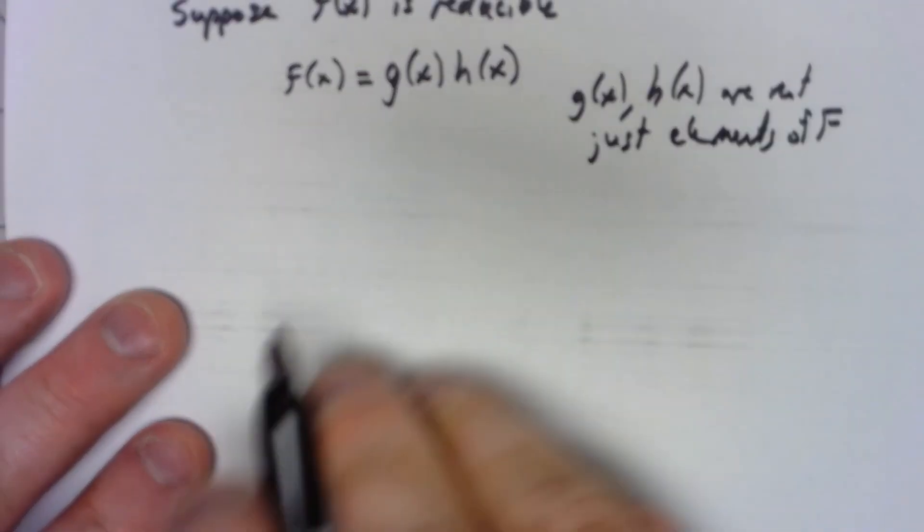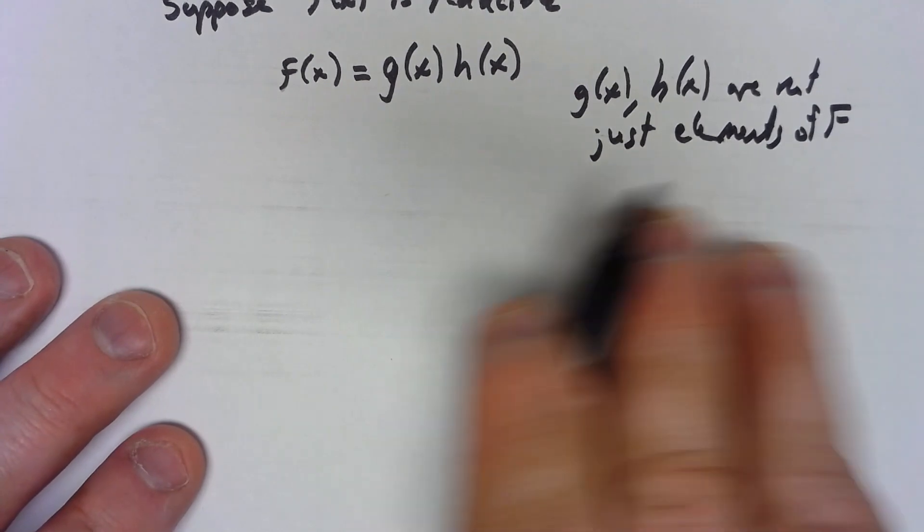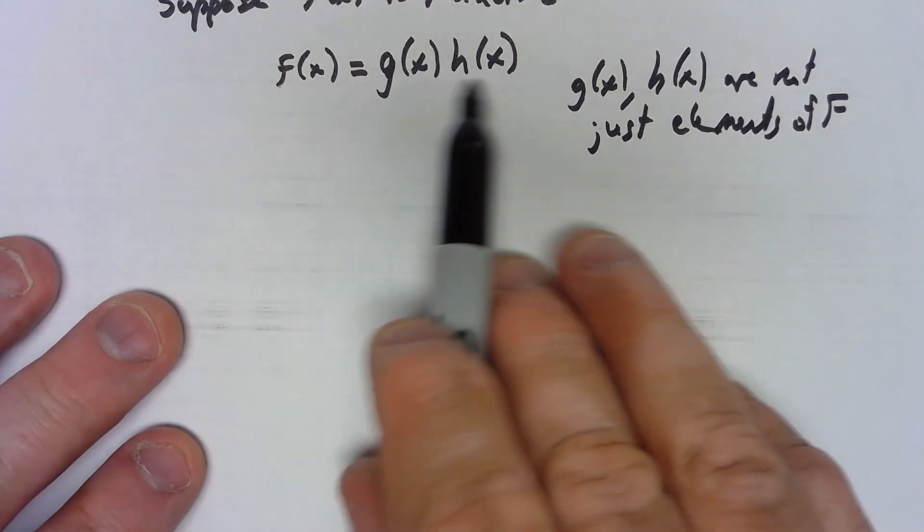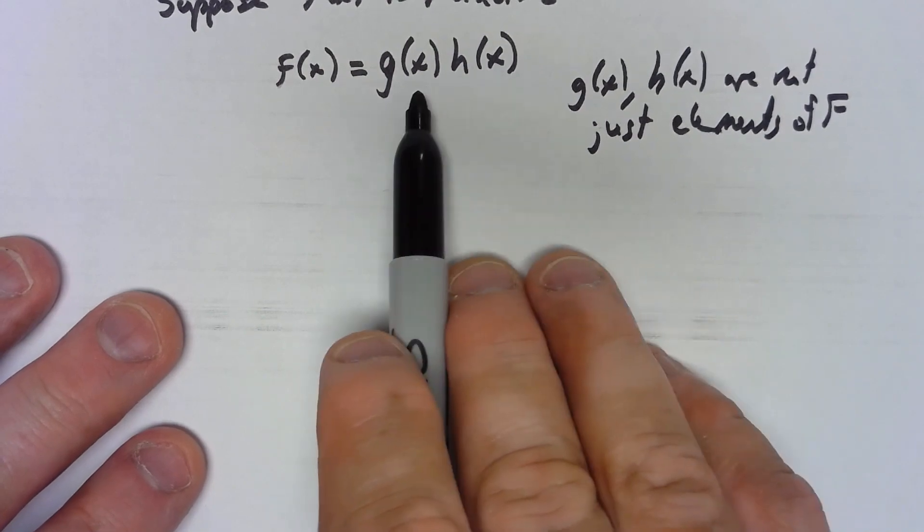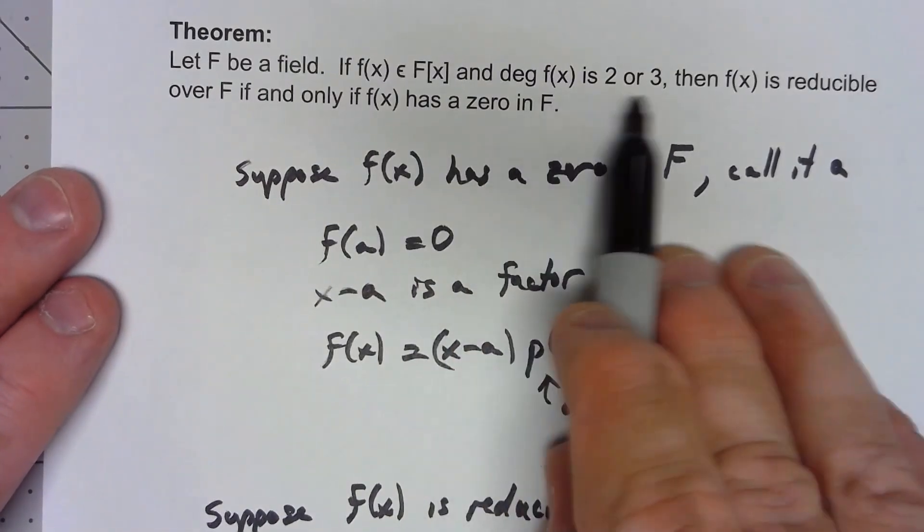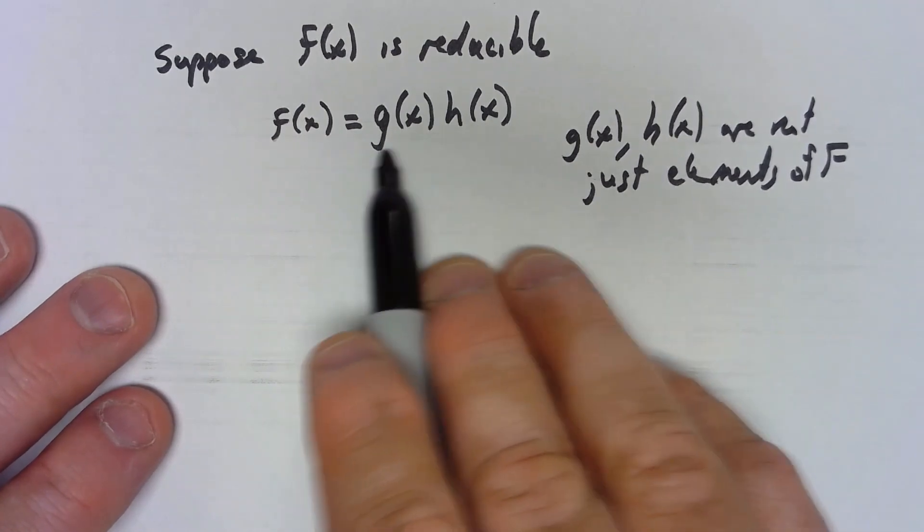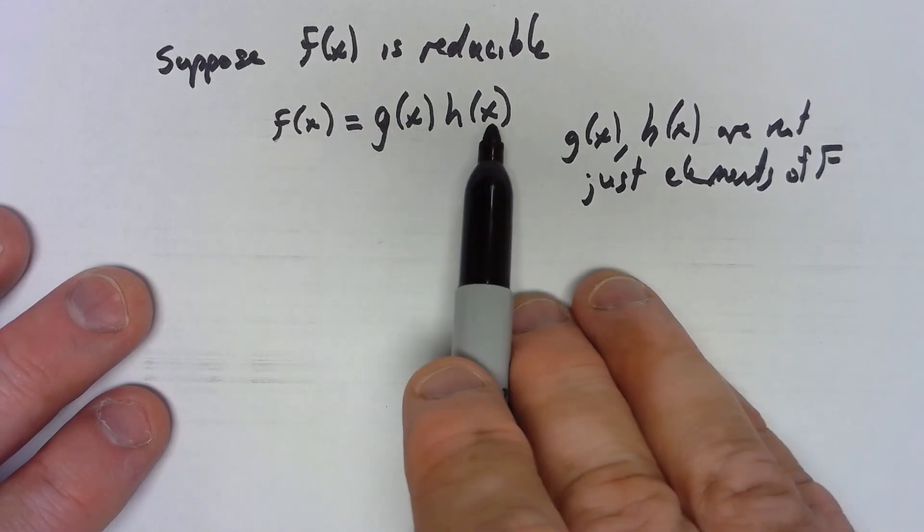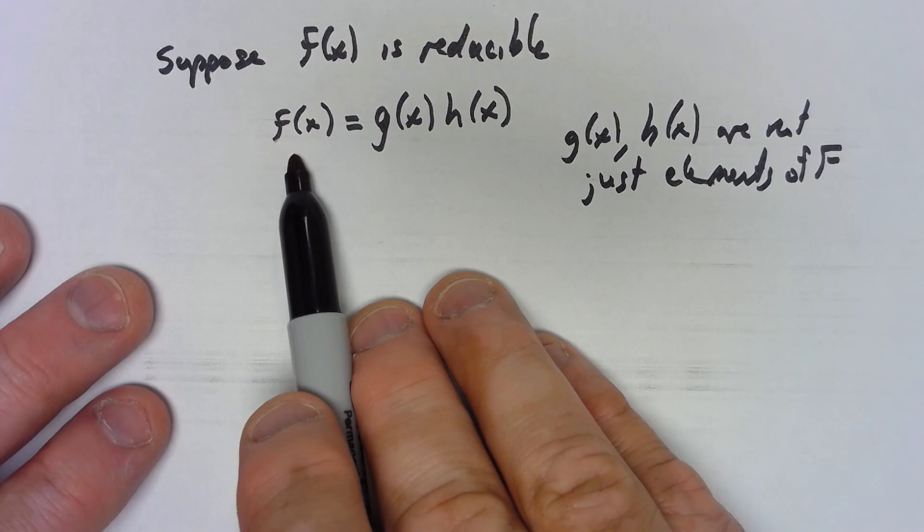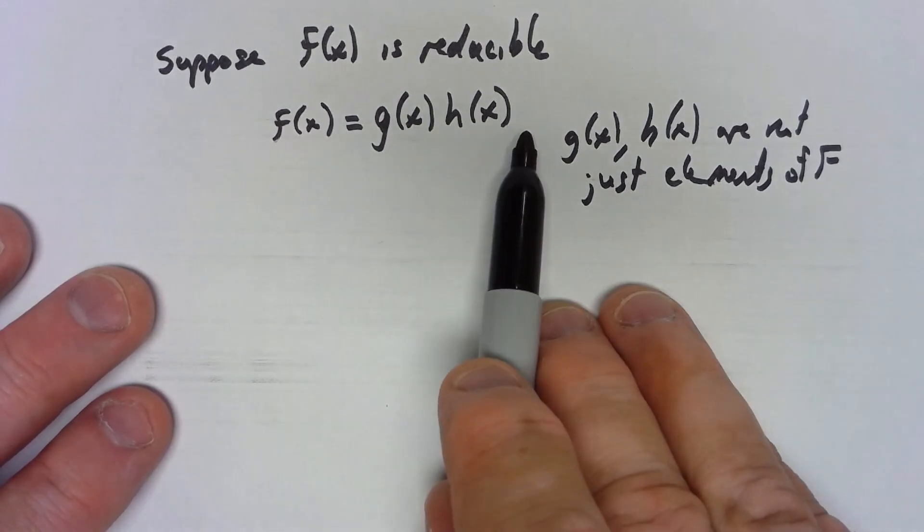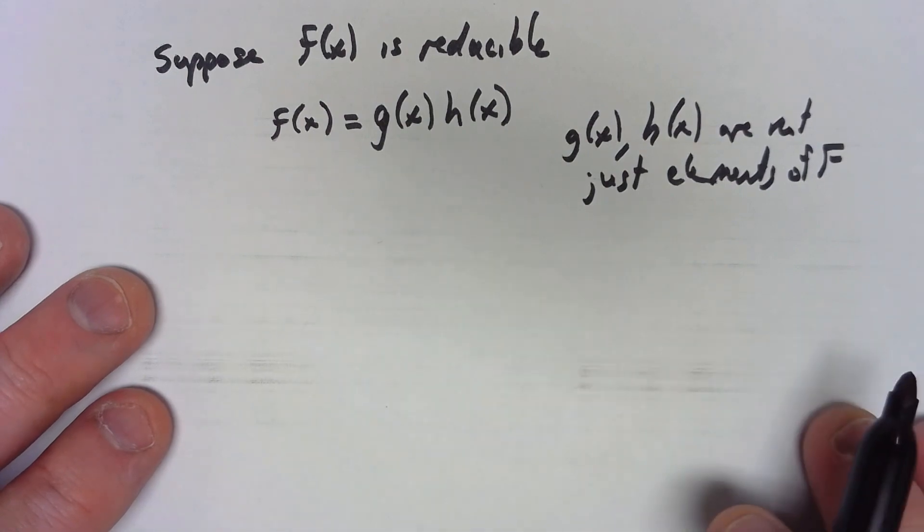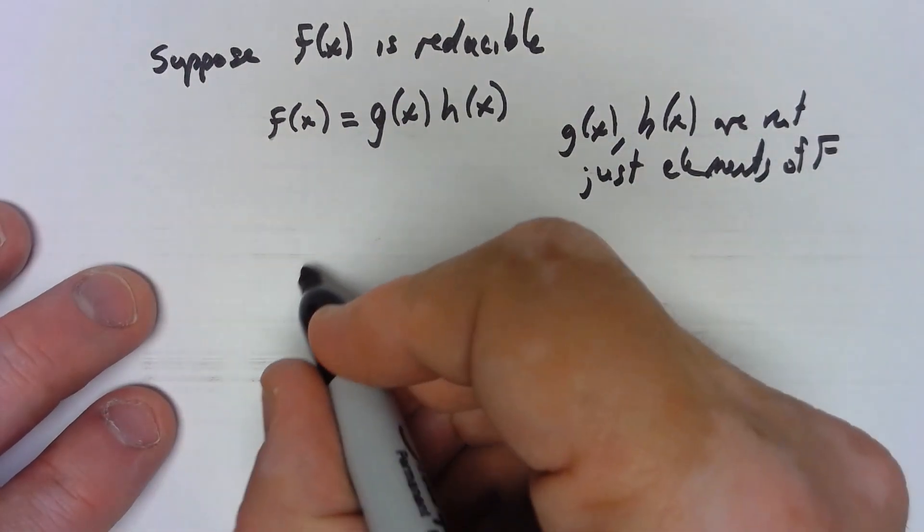If they were just elements of F they'd have multiplicative inverses because that's what a field means so it must be the degree of each of these things is at least one. One of them has to be degree 1. If f(x) was degree 2 we'd have degree 1 and a degree 1. If f(x) was degree 3 the only way would be one of these is degree 1 the other is degree 2. But either way one of these things is degree 1.